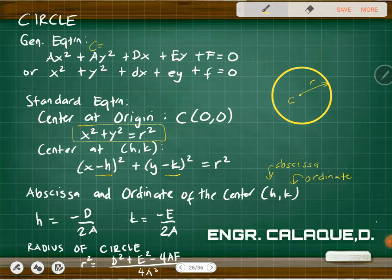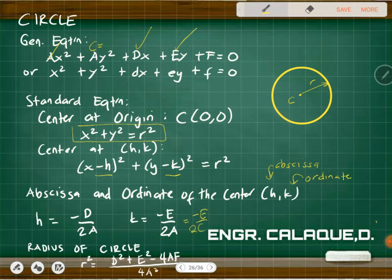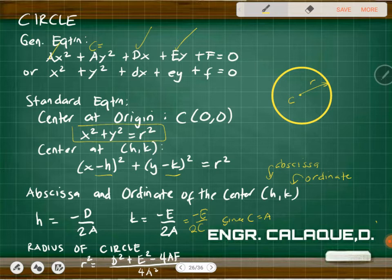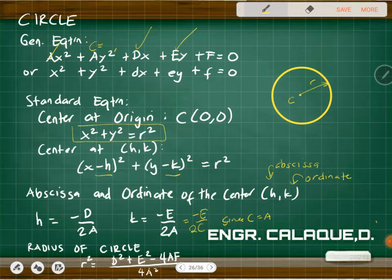The abscissa of the center is just negative d over 2a, and the ordinate is negative e over 2c — but since c equals a, it can also be negative e over 2a. For solving the radius of the circle, it's just: d squared plus e squared minus 4a times f, all over 4a squared.